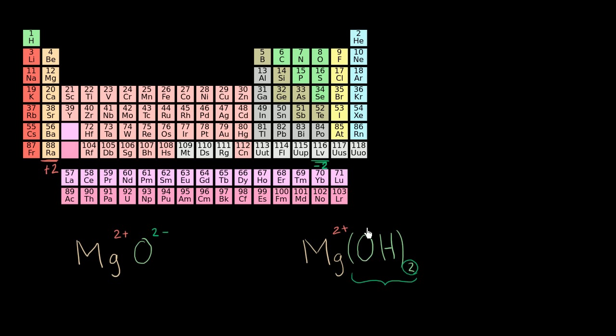If oxygen has a -2 oxidation state, hydrogen has a +1 oxidation state. Each hydroxide part of this molecule is going to have a net oxidation state of -1. But then you have two of them. So the net oxidation for this part of the molecule is going to be -2. Nets out with a +2 from magnesium. So once again, it makes sense.